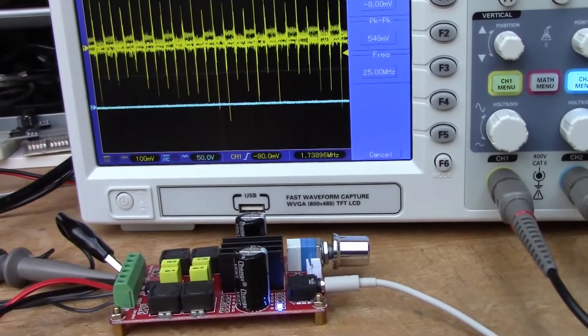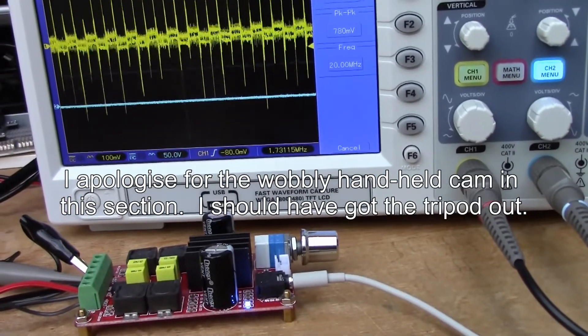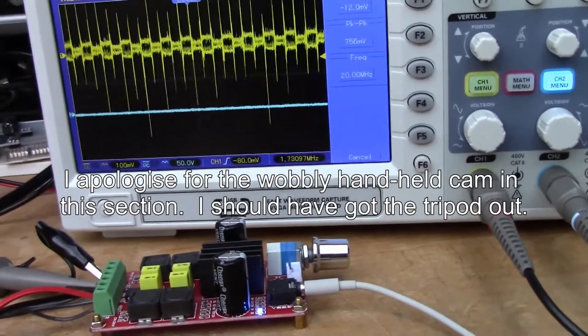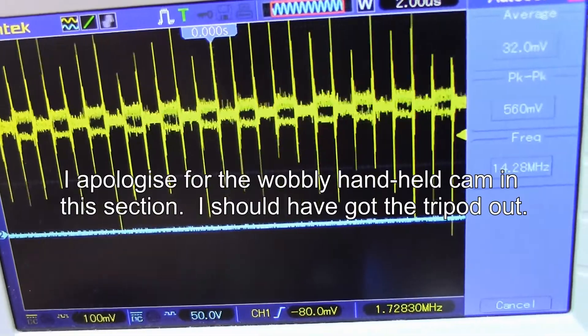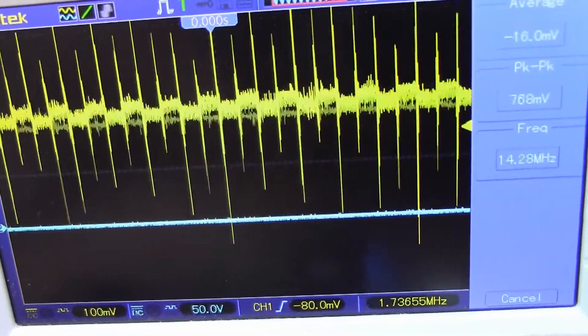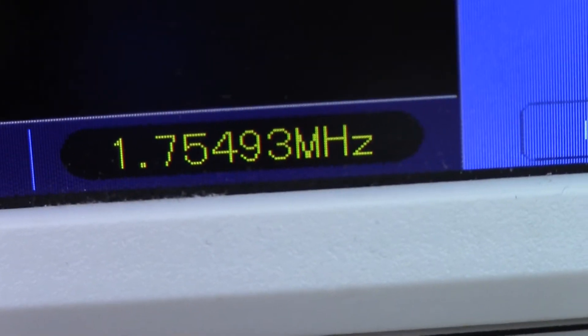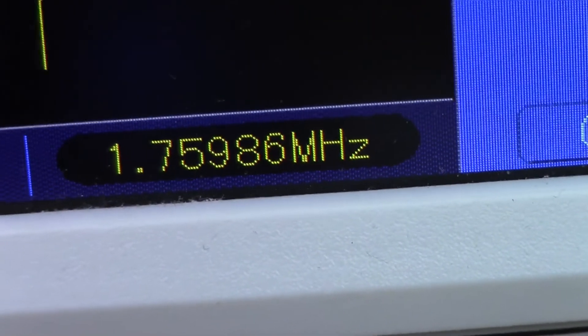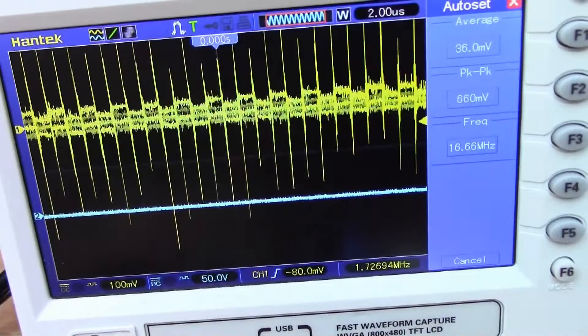Something I hadn't really allowed for is that the class D amplifier actually sends a train of square wave pulses. Looking at the bottom there, you can see the square wave pulses are 1.7 megahertz, and you can see some very square looking pulses jumping about there on the output of the amplifier.